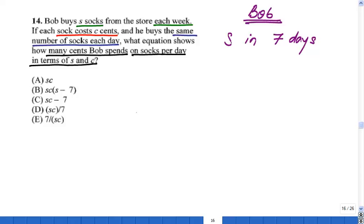Well, for S socks, Bob will pay for all the socks what? How many cents per sock, C, times how many socks he gets. So he will pay for all the socks in one week, C times S.